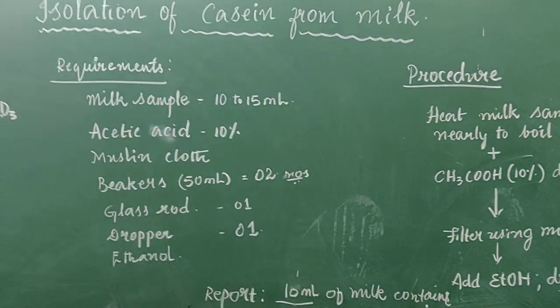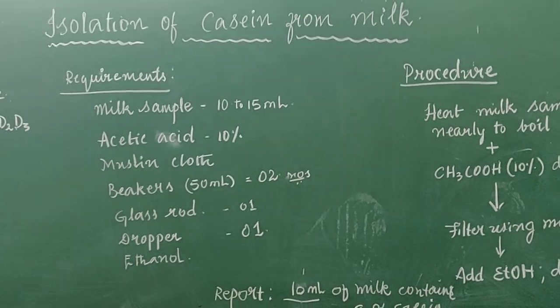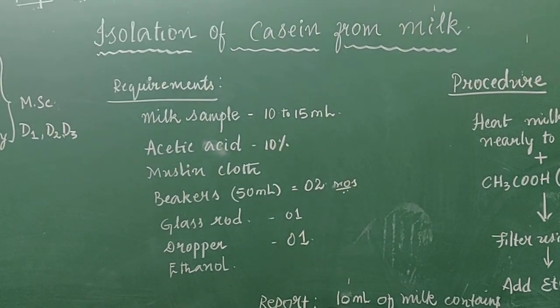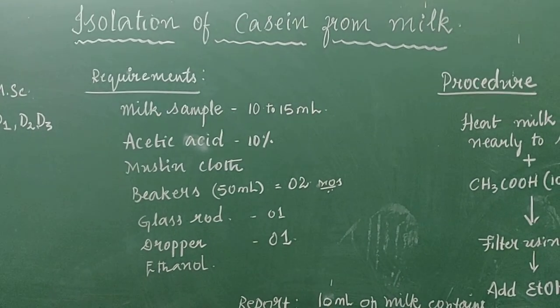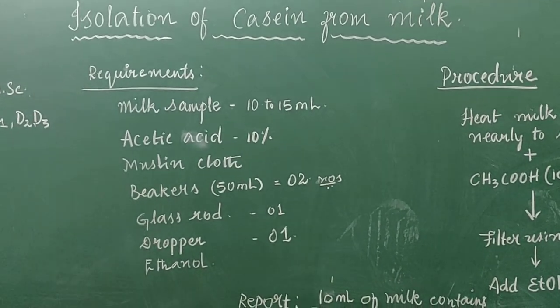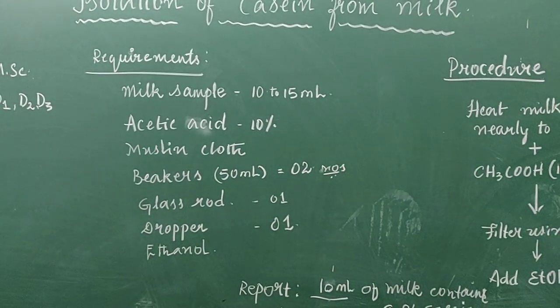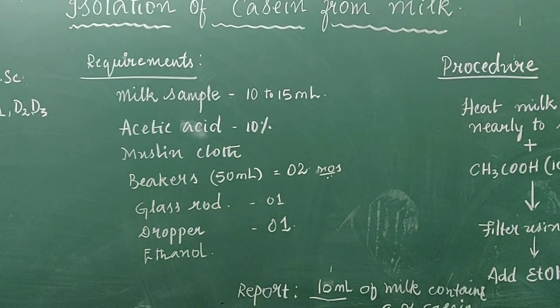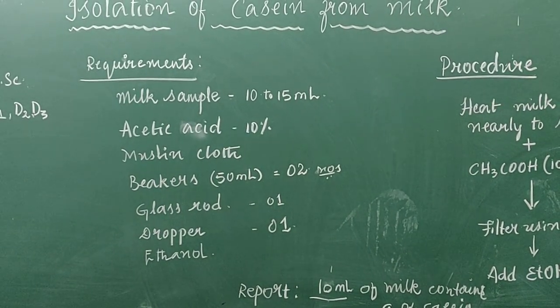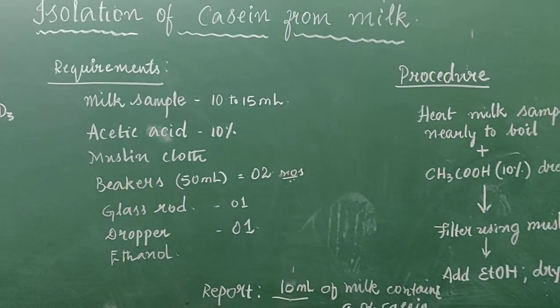The principle here is amino acids are the building blocks of any protein. Casein is a protein which is found in milk. We are going to play with the pH of milk. From neutral, we are going to make it acidic and we are going to precipitate out casein. More about the theory of this experiment shall be in the second video. Here I am going to only perform the experiment.